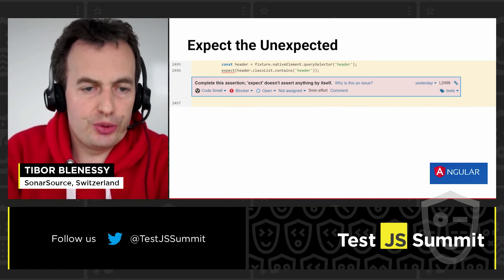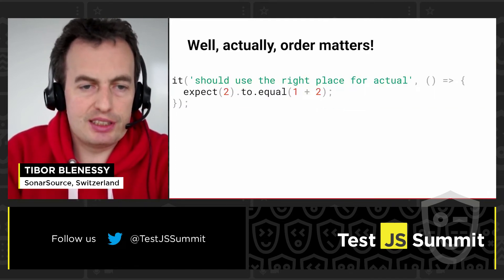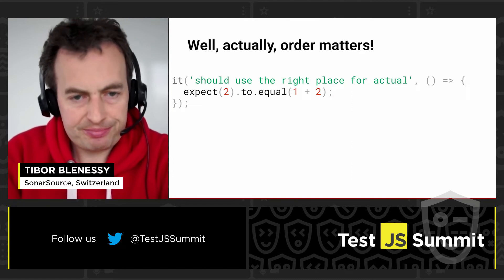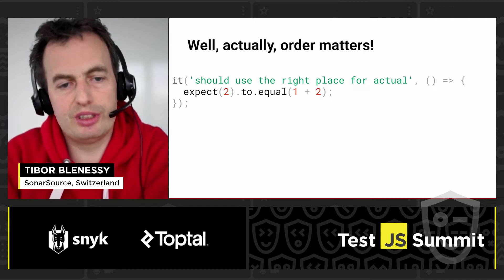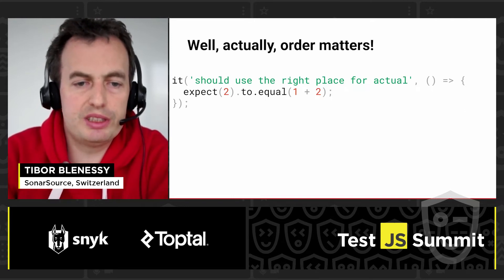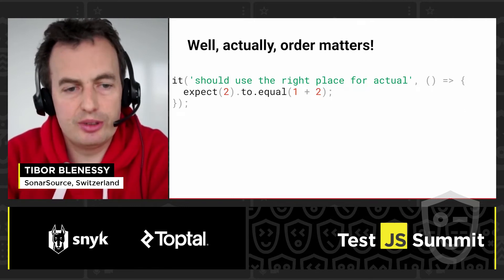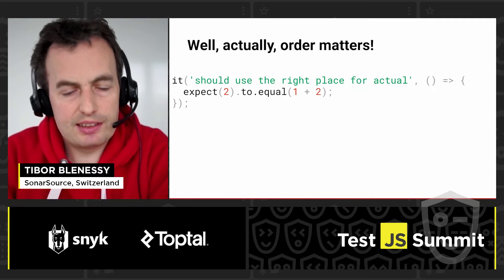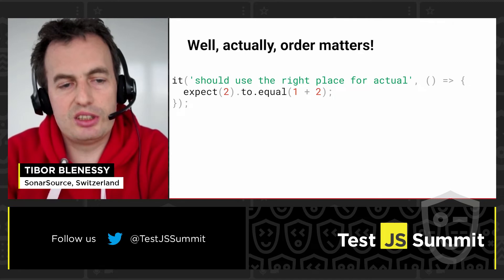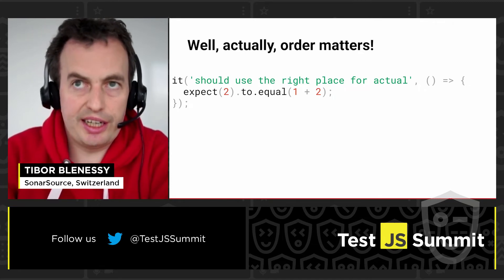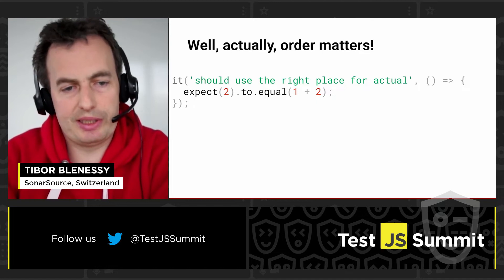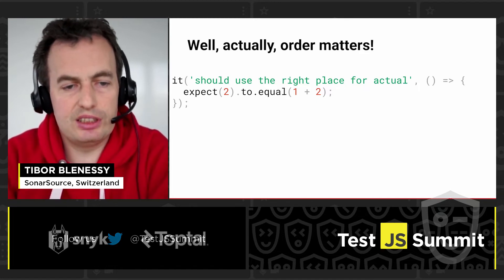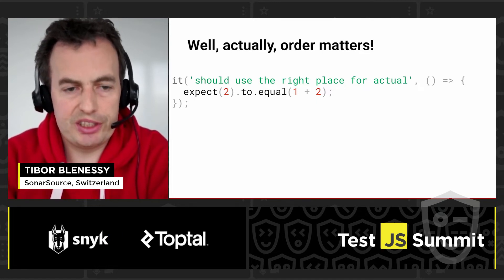The next issue I would like to show you might be a bit cosmetic, however it often helps to have a clear test to better understand the real issue. So in the following test, when you write your assertion, you always need to provide the actual value — which is the result of the test — and your expectation. The order in which these values are provided matters.